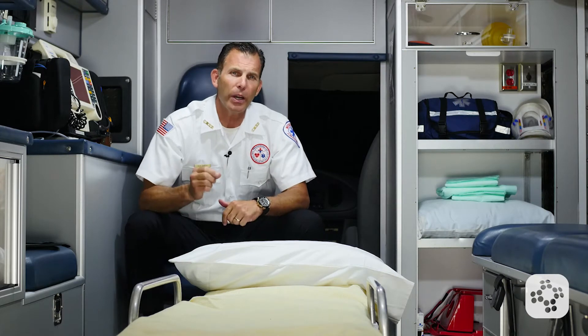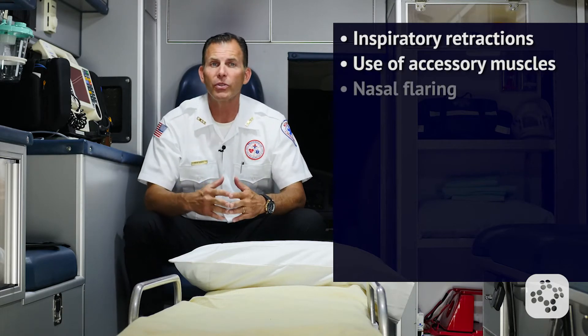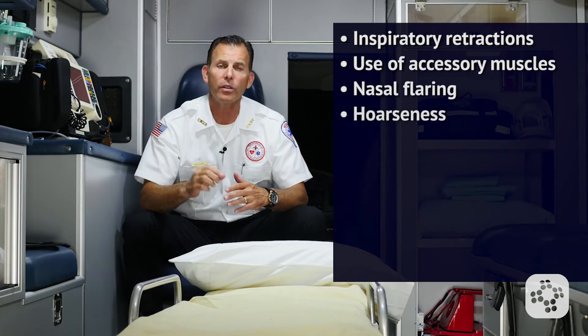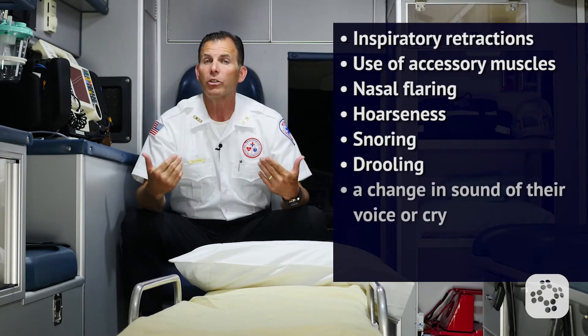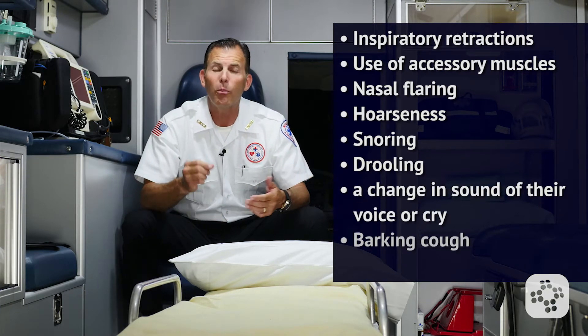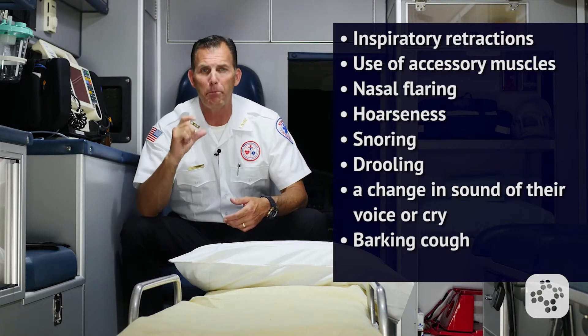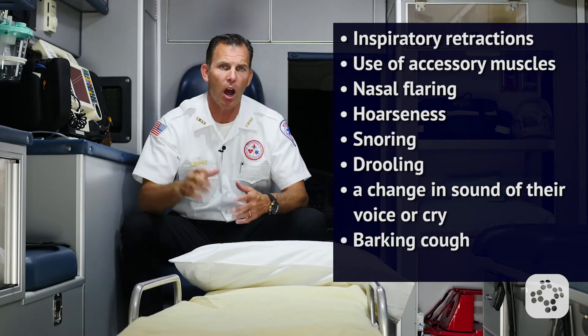The signs of upper airway obstruction differ from lower airway obstruction in that signs occur mostly during inspiration. Typically, these include inspiratory retractions, use of accessory muscles, nasal flaring, hoarseness, snoring, drooling, a change in the sound of the voice or cry, or that very common barking seal-like bark cough.